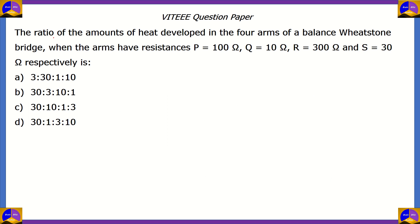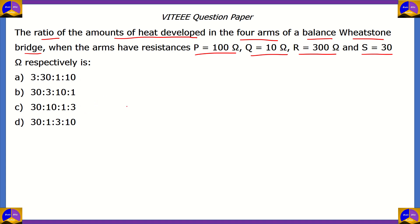Now let's look at another question. The ratio of the amounts of heat developed in the four arms of a balanced Wheatstone bridge, where the arms have resistances P equals 100 ohms, Q equals 10 ohms, R equals 300 ohms, and S equals 30 ohms respectively is — and we've got four ratios given in the options. We need to find out which is the correct option.